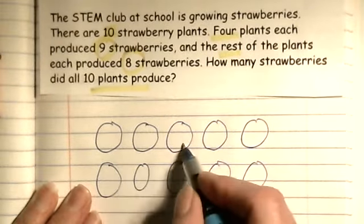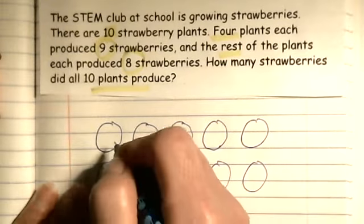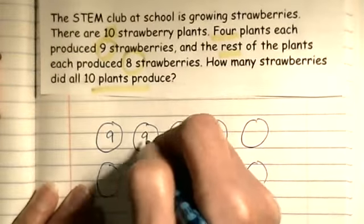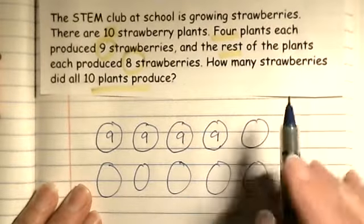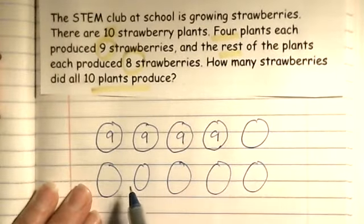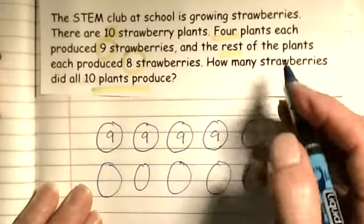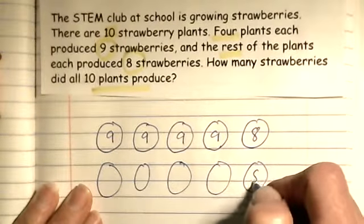Four of the plants, one, two, three, four, each produce nine strawberries, and the rest, which would be one, two, three, four, five, six, produced eight strawberries.